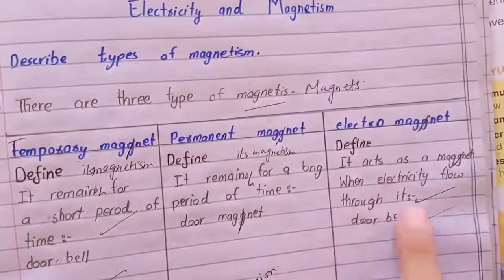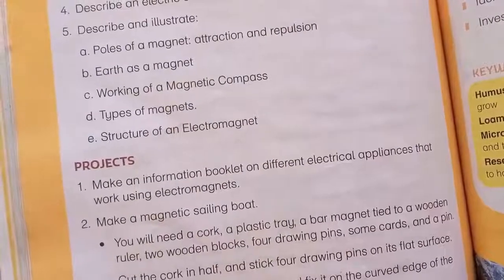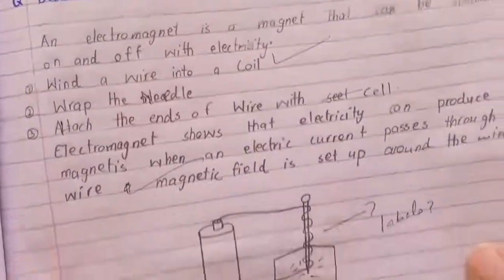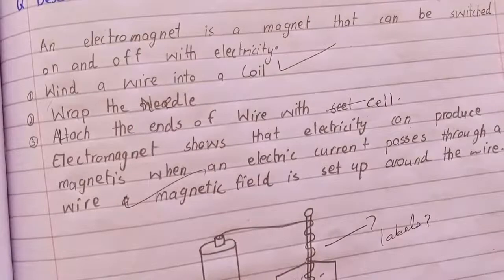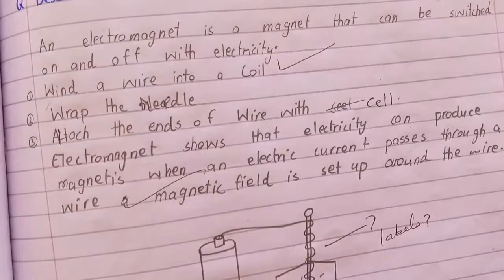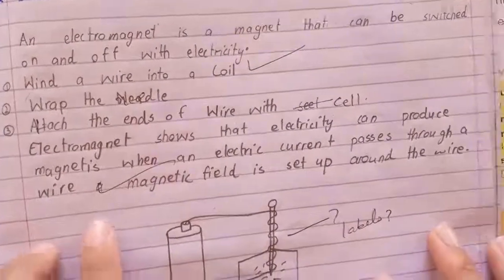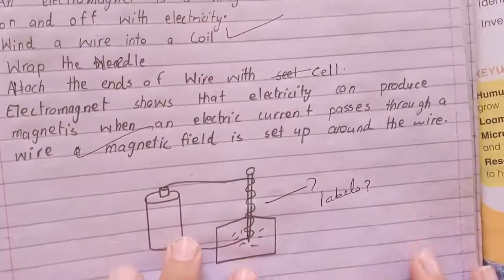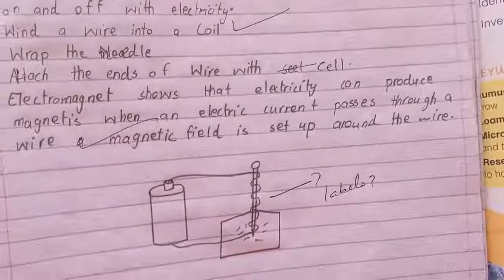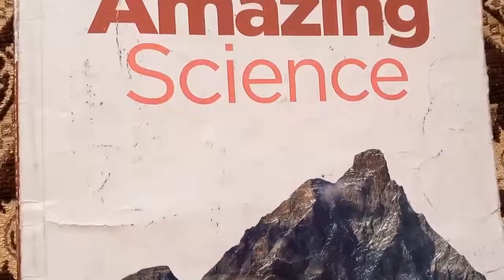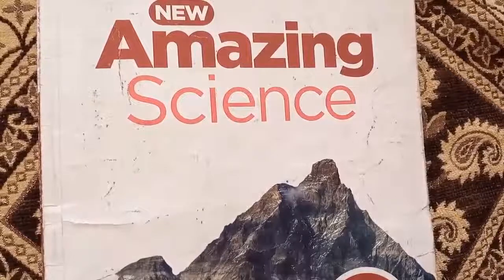An electromagnet can act as a magnet when electricity flows through it - for example, a doorbell. An electromagnet is a magnet that can be switched on and off with electricity. When a wire is wrapped into a coil, it creates an electromagnet. This shows that electricity can produce magnetism. When electric current passes through a wire, a magnetic field is set up around the wire.